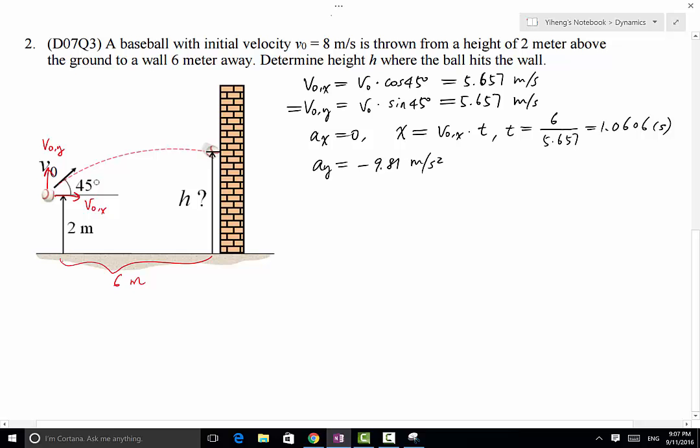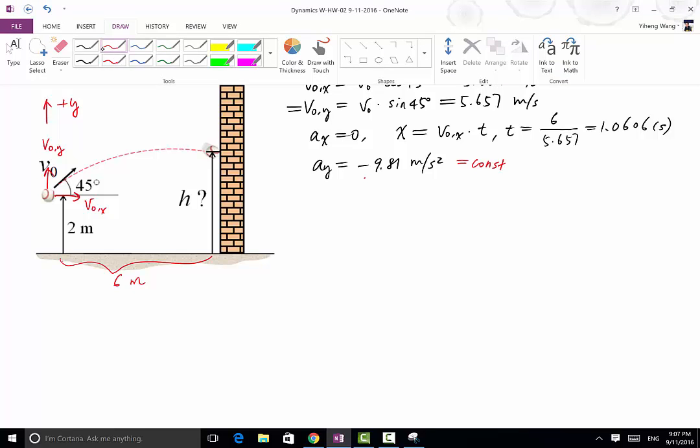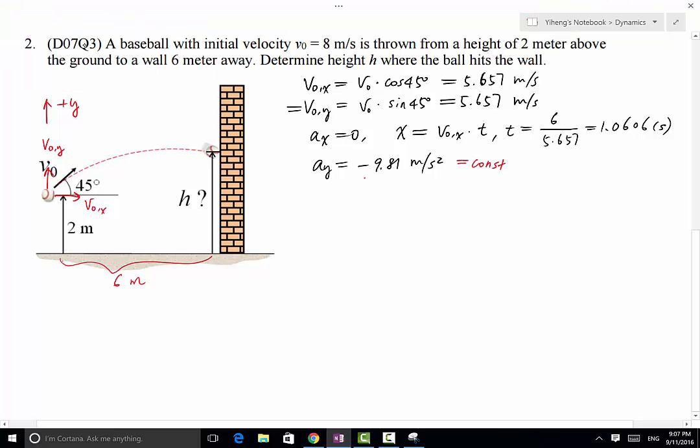By saying that, I am assuming up is positive y direction. Therefore, because acceleration due to gravity is always downwards, therefore we have negative 9.81 meter per second squared. So because this is also a constant, therefore the three kinematic equations for constant acceleration apply.